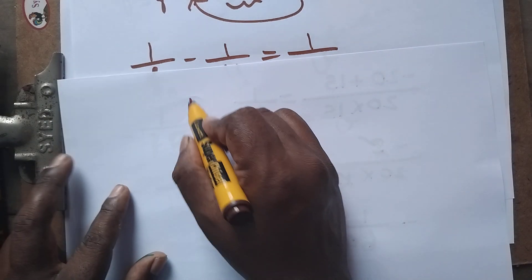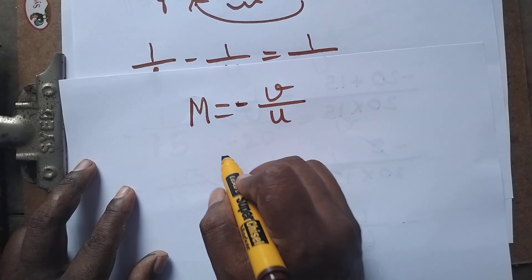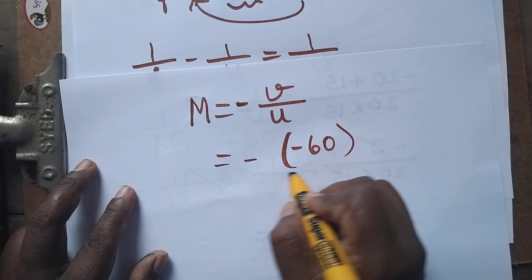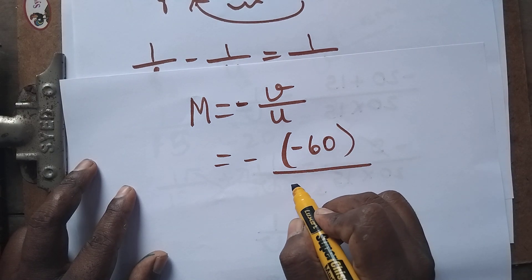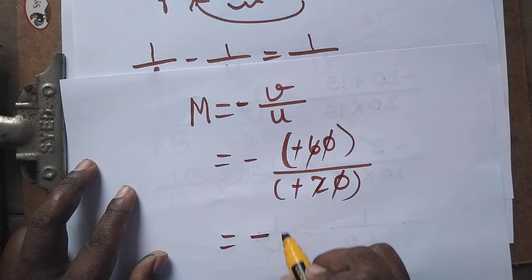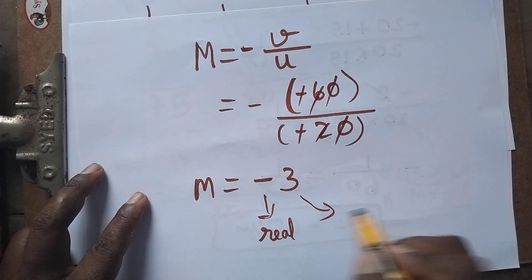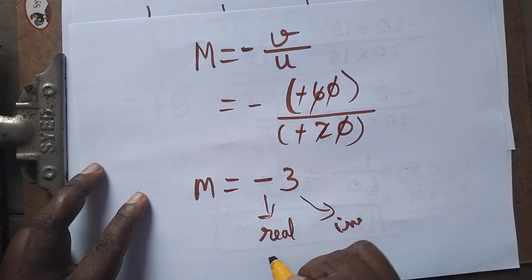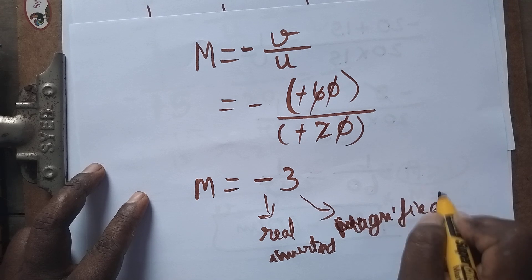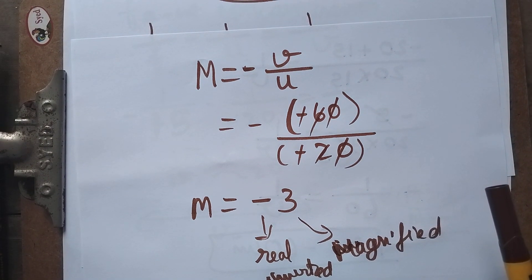Now for magnification: m = -v/u. v = -60 cm and u = -20 cm. So m = -(-60)/(-20). The two negatives cancel in the numerator, giving 60/(-20) = -3. The magnification is -3. As I told you, negative means real and inverted, and more than 1 in magnitude means it's magnified. This is how you solve the problem — you can verify whether your answer is correct or wrong.